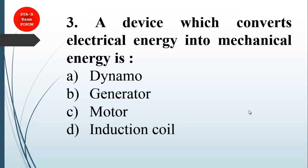Next question: a device which converts electrical energy into mechanical energy. Dynamo and generator both convert mechanical into electrical energy. Induction coil is based on electromotive force. Option C is correct - motor, which converts electrical energy to mechanical. You can think of a fan: when you switch it on, electrical energy is converted into mechanical so it starts rotating. The correct answer is motor.